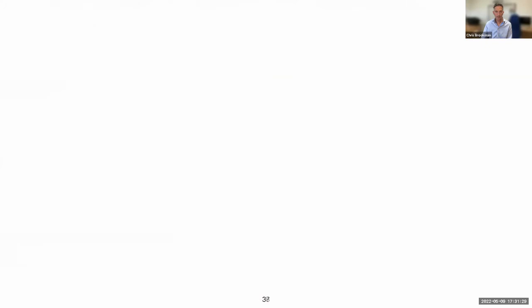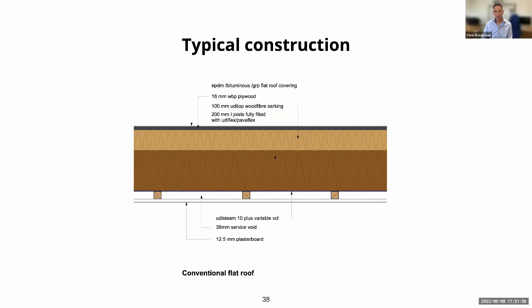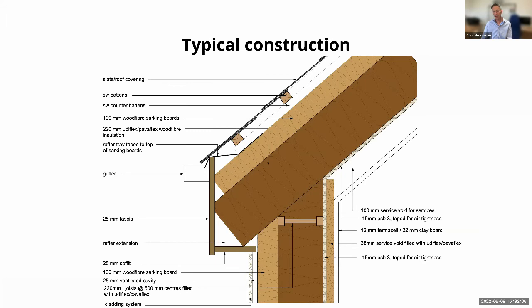Looking at typical construction details: one useful thing you can do with wood fibre is build an unvented hybrid flat roof — insulate between the joists, insulate on top, put your ply or OSB on top, and then a synthetic membrane such as EPDM, bitumen, or GRP over that. Timber frame walls with boards on the outside — boards are used on the outside mainly because they absorb a lot of heat; it's more about keeping you cool in the summer. Those boards absorb most of the day's heat, keep it on the outside, and then overnight radiate it back outwards, keeping the interior cool. Fabric gains are generally very very low with wood fibre construction.